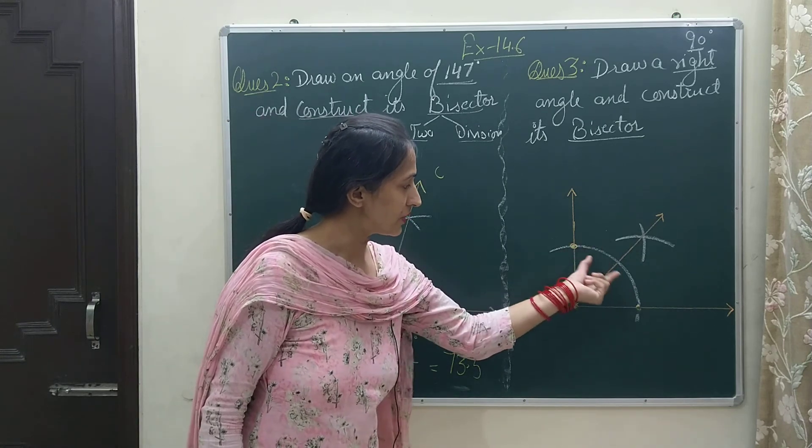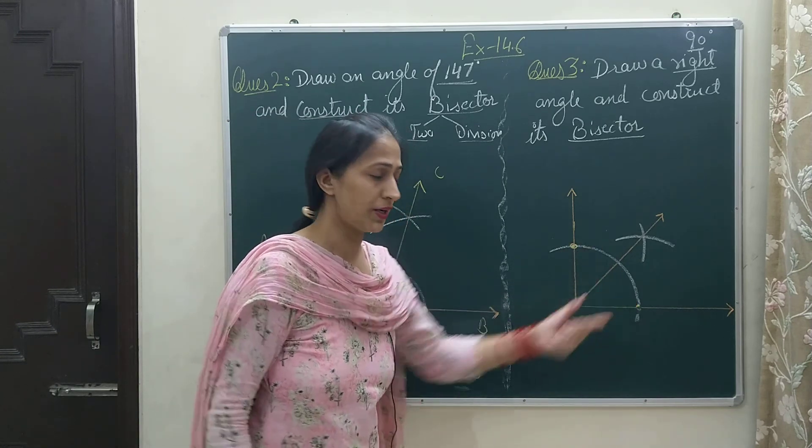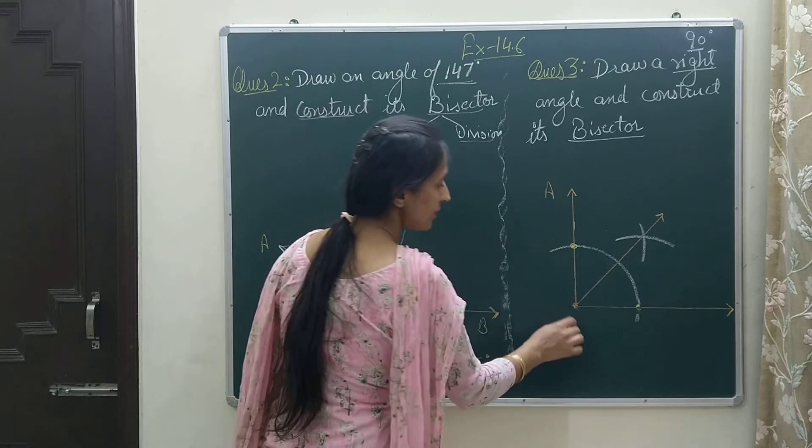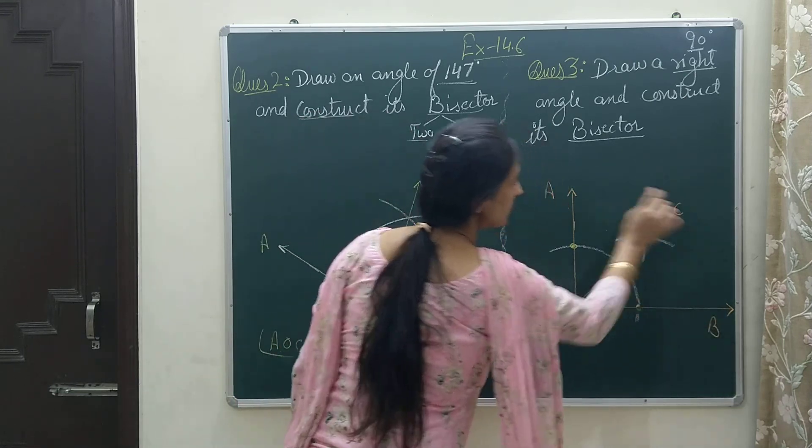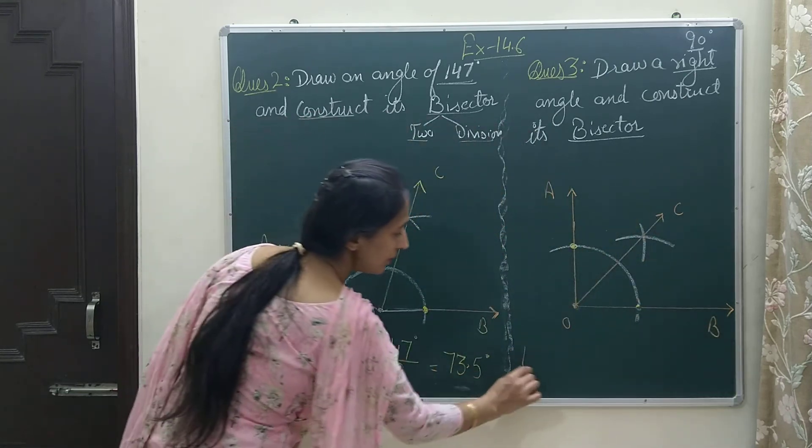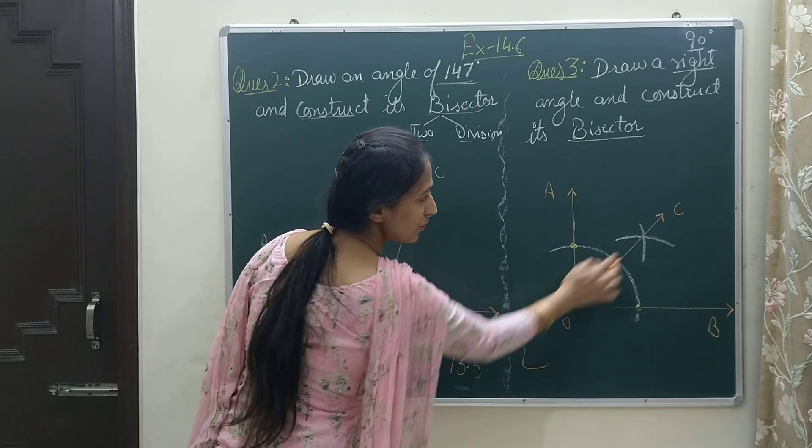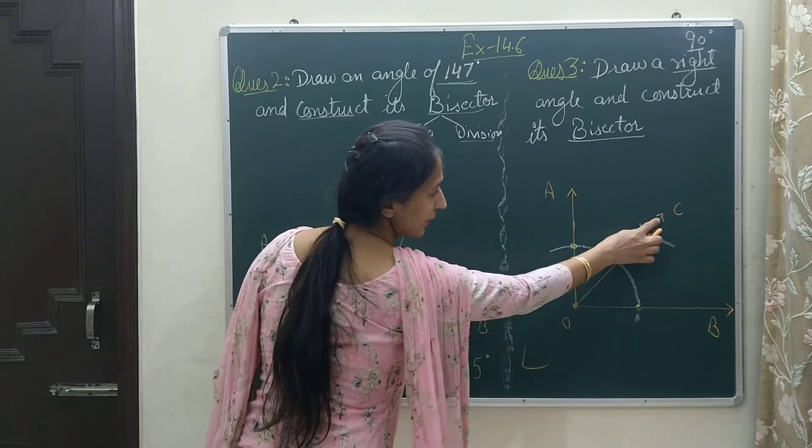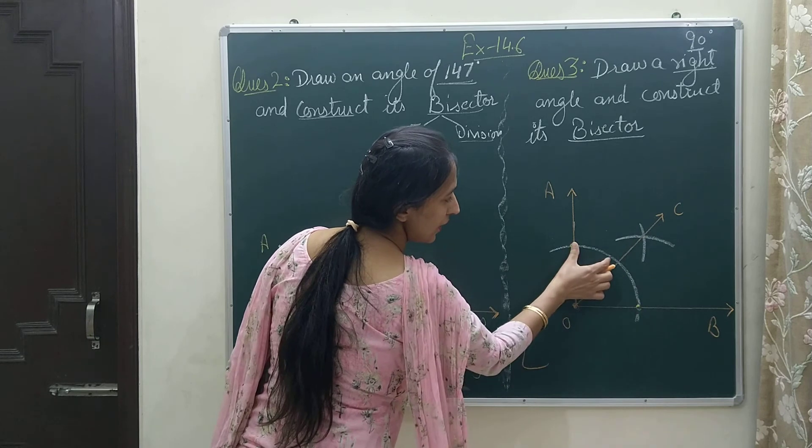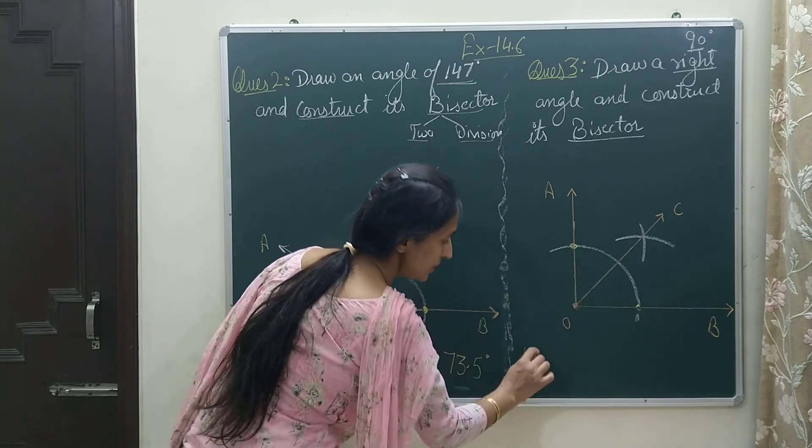So the 90-degree angle is now divided into two equal parts. This part is equal to this part. I can name it according to my choice: A, O, B, C. This smaller angle AOC is now equal to another smaller angle COB. Both are half of 90, that means 45 degrees. Thank you.